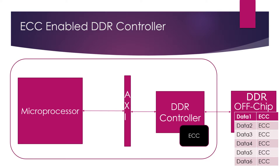ECC stands for Error Correcting Code. In ECC mode, the DDR controller writes a few extra bits along with the data while writing to DDR memory, as shown in the figure. While reading DDR memory, if there is any bit flip or bit error in the data, the DDR controller can detect and correct them with the help of these ECC bits.